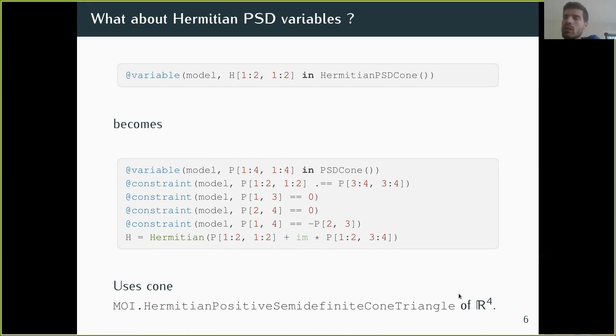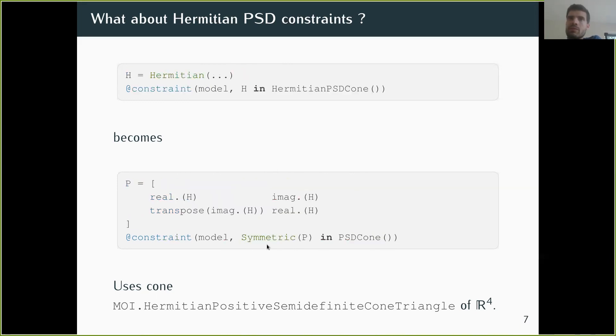We've done the same thing for a constraint where you have a final quadratic expression of the variables and you want it to be in the real PSD cone. Again, you have the same reformulation, and this transformation is done lazily because you've added the set of Hermitian PSD variables.